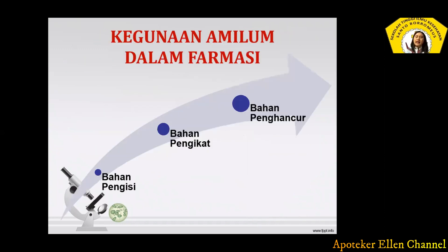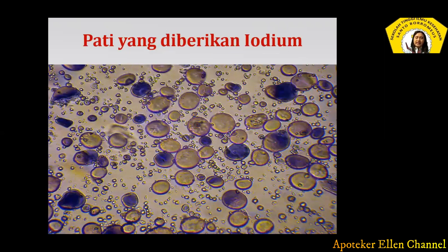Untuk kegunaan amilum dalam farmasi ada tiga: yang pertama sebagai bahan pengisi, bisa juga sebagai bahan pengikat, dan bahan penghancur. Ini tadi sifat dari amilum: apabila diberikan iodium, maka dapat terdeteksi warna biru keunguan. Jadi, apabila kalian menemukan bubuk, kemudian kalian tambahkan iodium dan terlihat gambar seperti di layar ini, otomatis dia mengandung amilum.